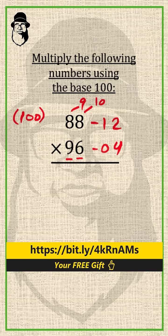The first step of the process is to cross subtract: 88 minus 4, or you can cross subtract from here also, 96 minus 12. Both will give you 84. That's the first part of the answer.